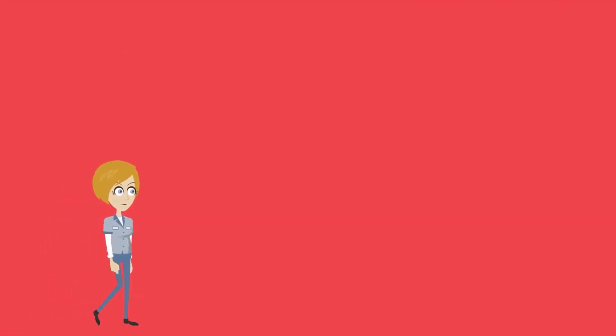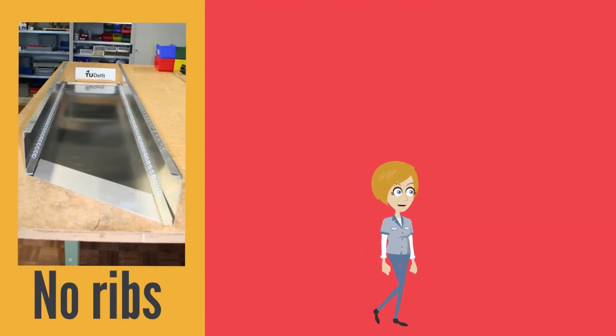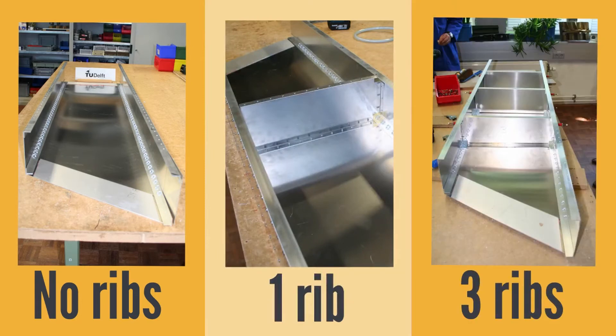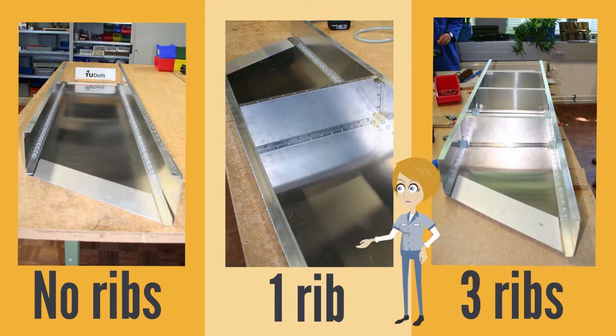I'd like to test three conditions: one wing box with no ribs, one with one rib, and one with three ribs. This should give us a good idea of how ribs affect the strength and buckling of the wing box.